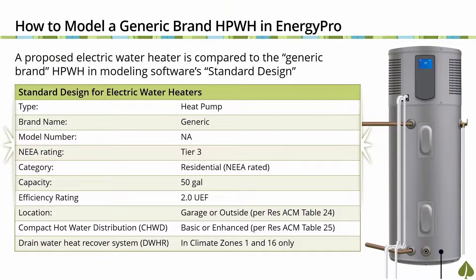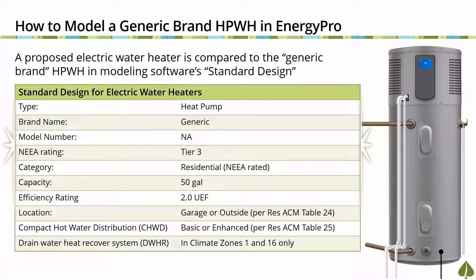When modeling low-rise residential buildings for compliance with the 2019 energy code, the standard design for domestic hot water or DHW system serving individual dwellings is based on the prescriptive requirement found in section 150.1 C8 and the proposed water heater type being either gas or electric. When the proposed design specifies an electric water heater, the compliance software sets the standard design to a generic brand heat pump water heater with a NEA Tier 3 rating, a capacity of 50 gallons, a UEF rating of 2.0, with the unit located in either the garage or outdoors depending on the climate zone.